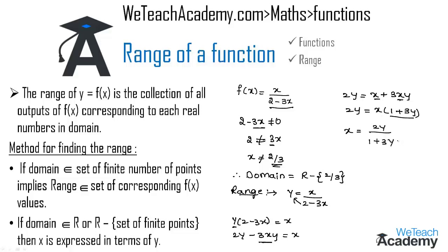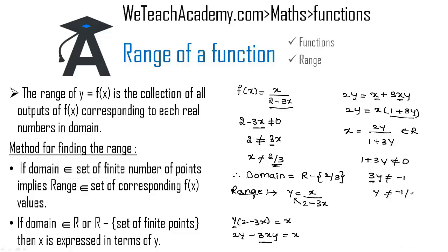For x = 2y / (1 + 3y) to belong to the real numbers, the denominator must not equal zero: 1 + 3y ≠ 0, so 3y ≠ -1, which means y ≠ -1/3. Therefore the range of the function is all real numbers except -1/3.